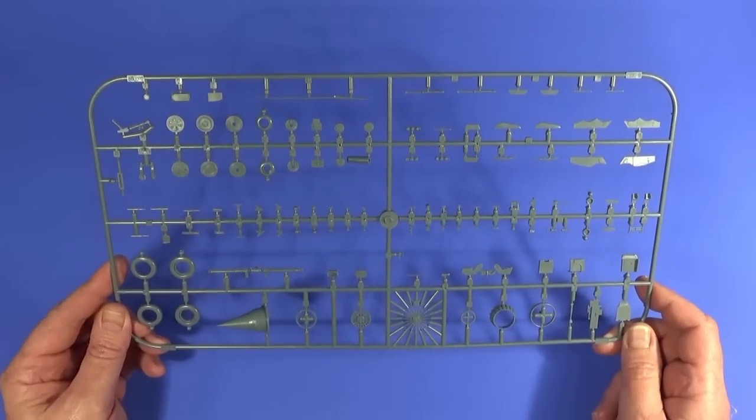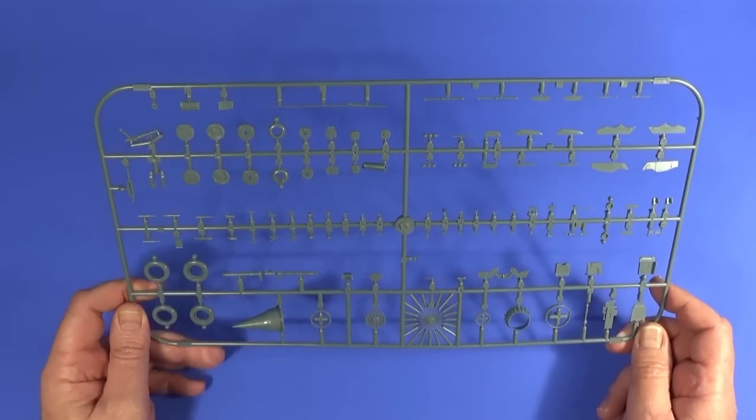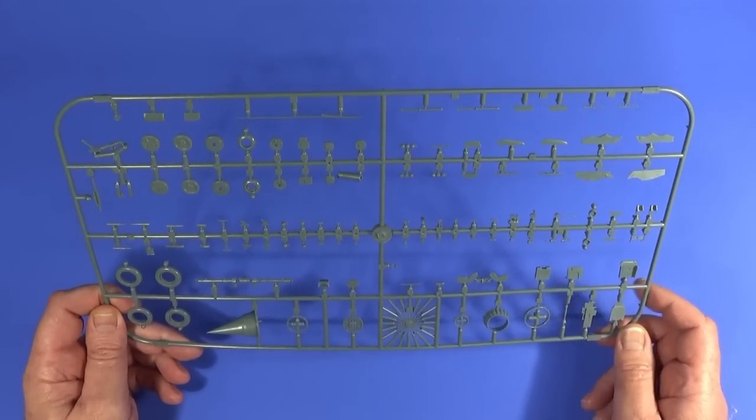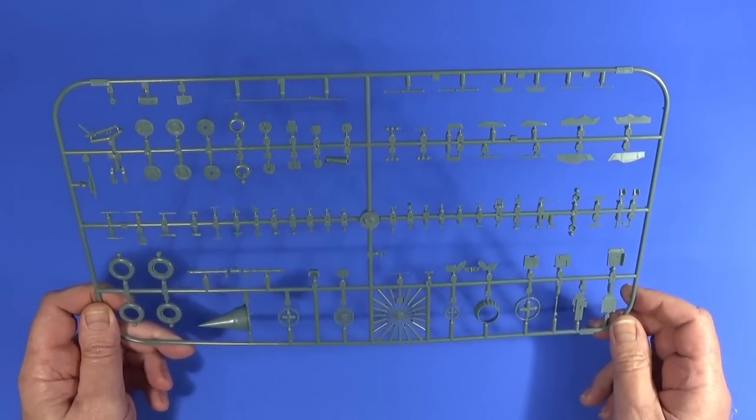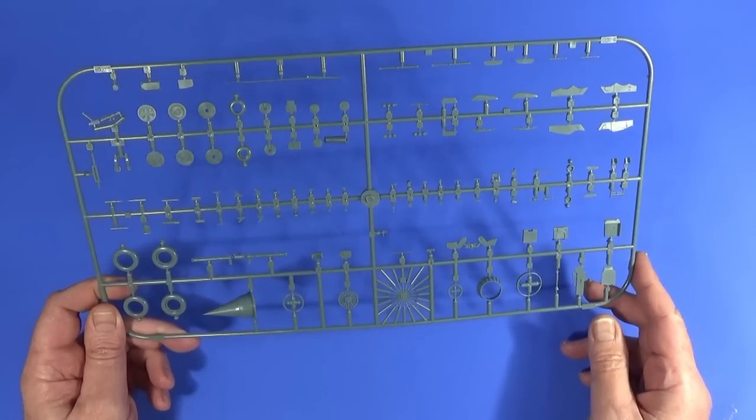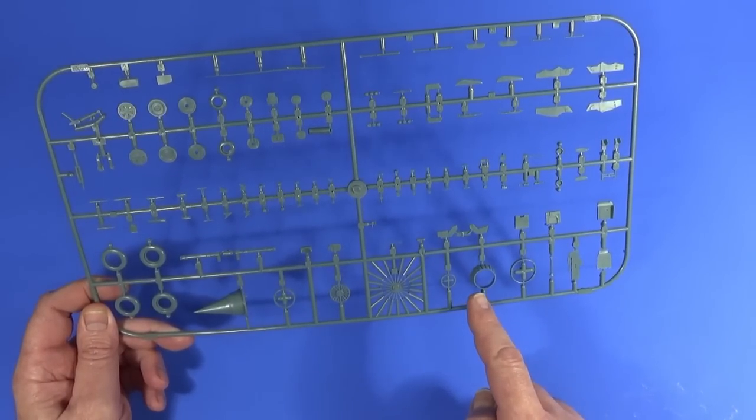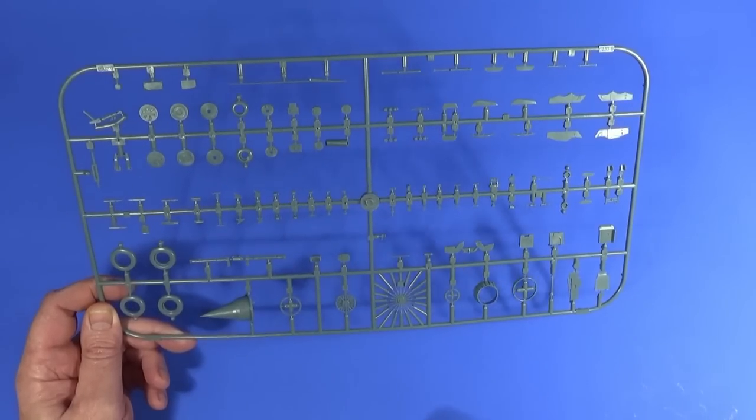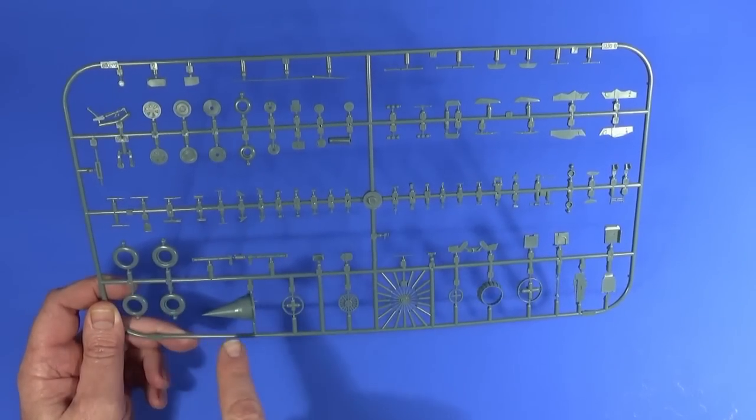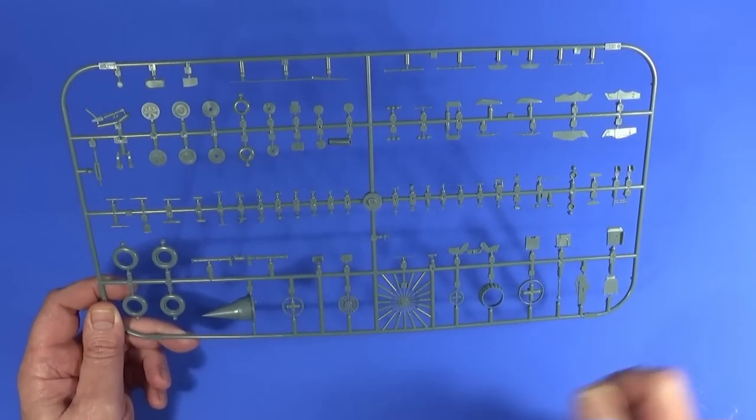Frame D, undercarriage parts, lots of other bits and pieces. The pitot here, huge pitot that it's got on this. A few gear doors. Some bits and pieces of engine. The exhaust cone here. The ejection seat is here. The wheels, the inlet cone as well.